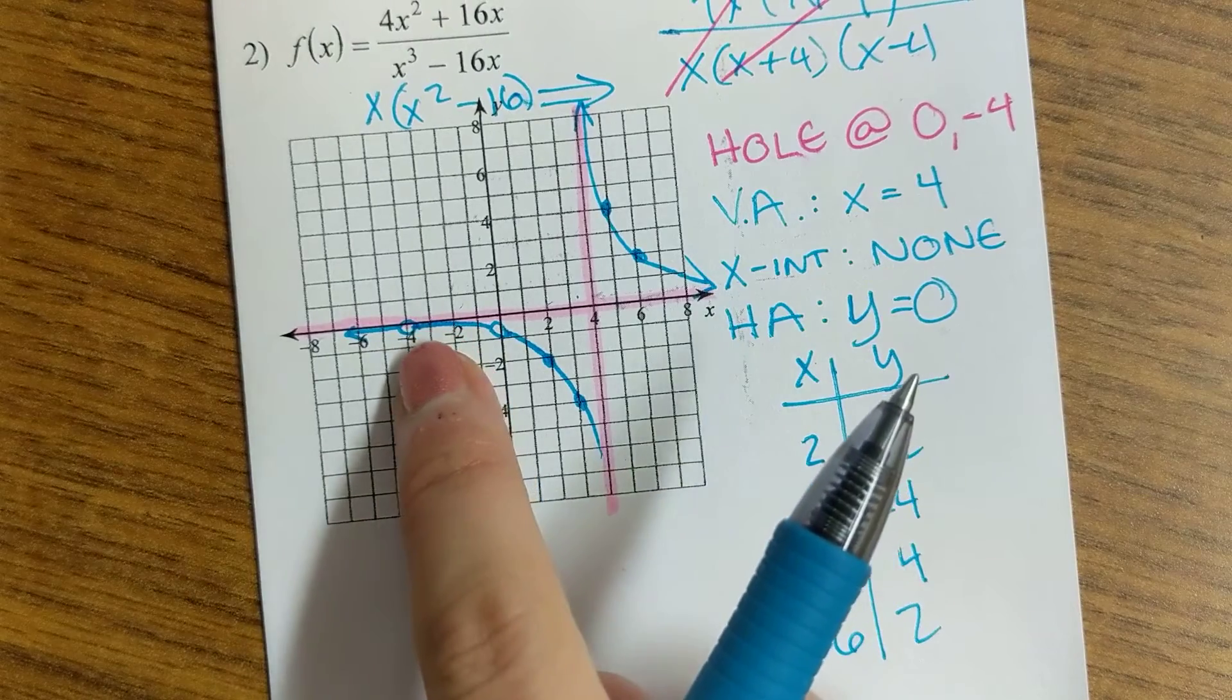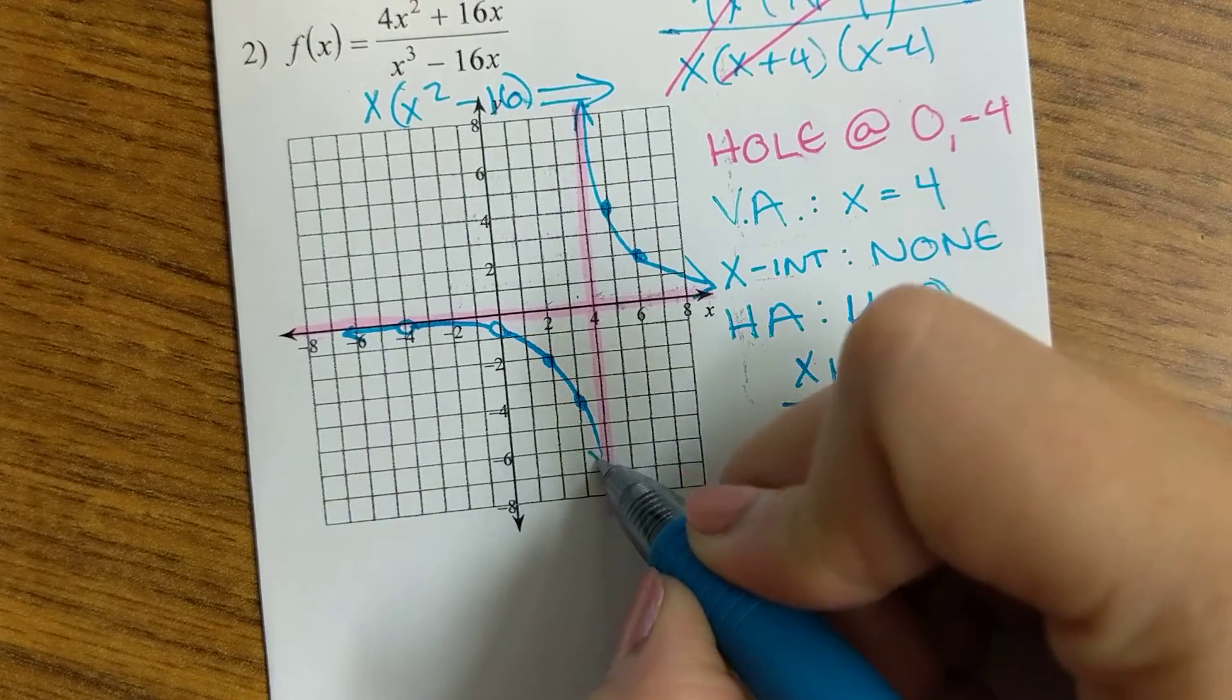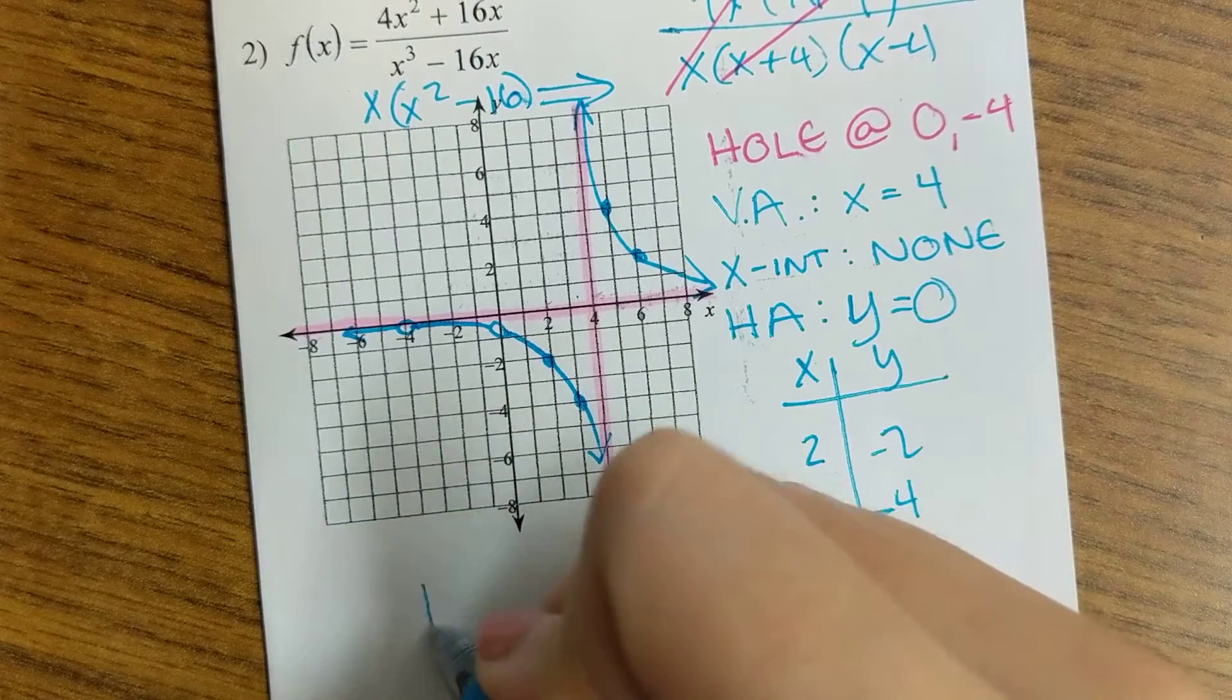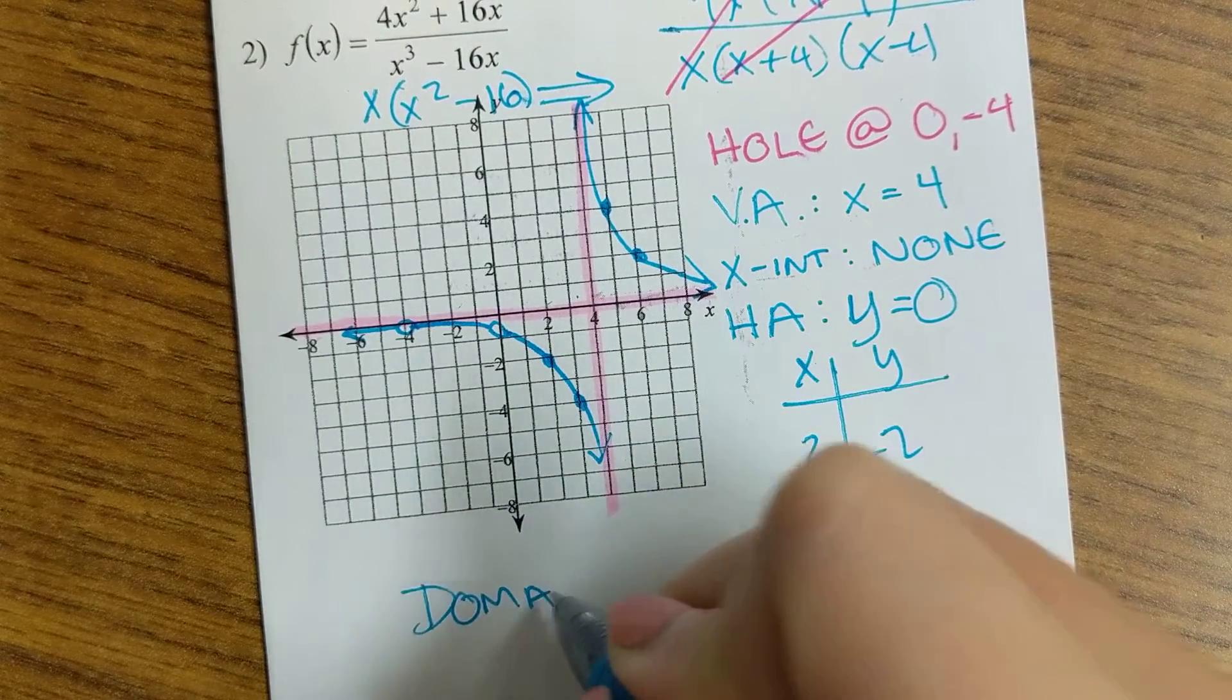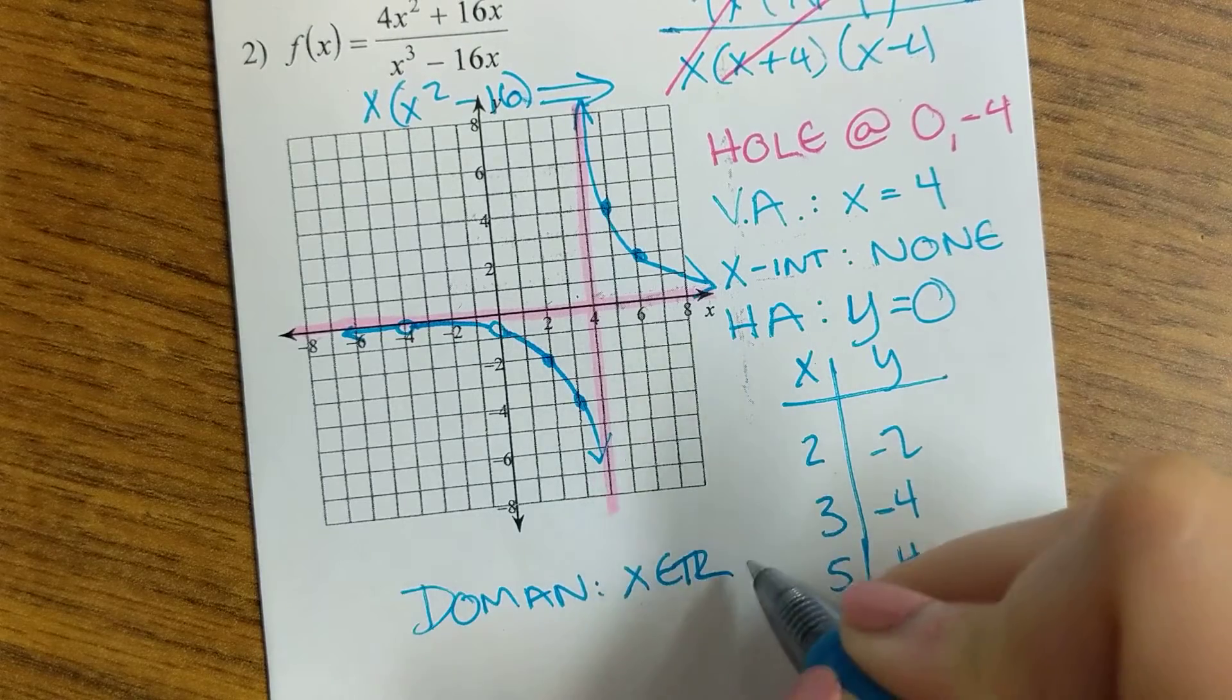Okay, so you have a hole at negative 4, a hole at 0, we have arrows, and our domain is everything except your holes and vertical asymptotes.